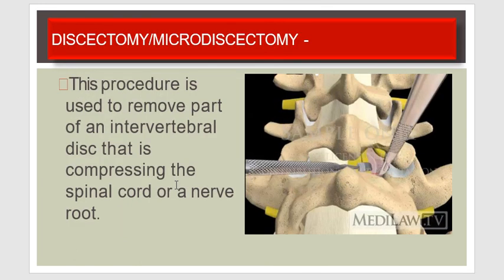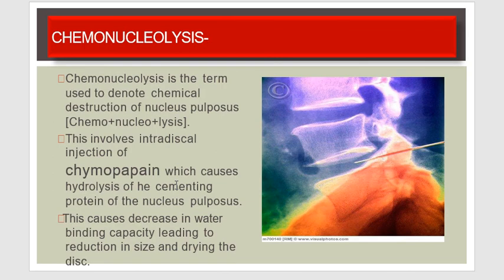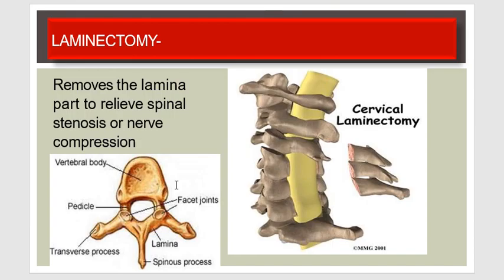Discectomy or microdiscectomy is a procedure to remove part of an intervertebral disc that is compressing a nerve root or the spinal cord. Chemonucleolysis refers to chemical destruction of the nucleus pulposus involving intradiscal injection of chymopapain, which causes hydrolysis of the cementing protein of the nucleus pulposus and decreases its water-binding capacity, leading to reduction in size and drying of the disc. Laminectomy removes the lamina to relieve spinal stenosis or nerve compression — as shown in this cervical laminectomy image.